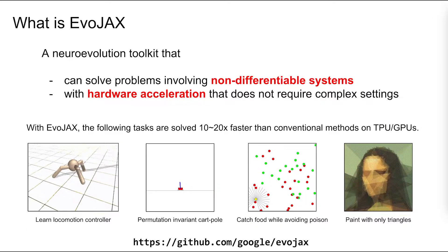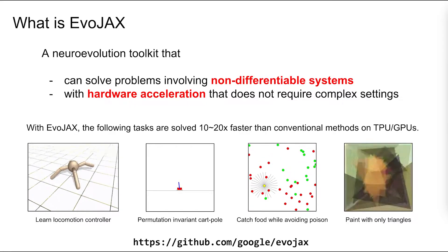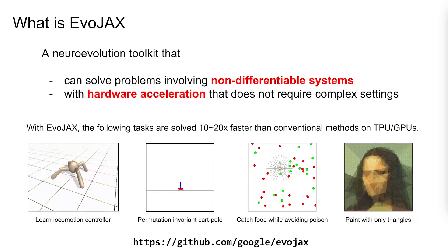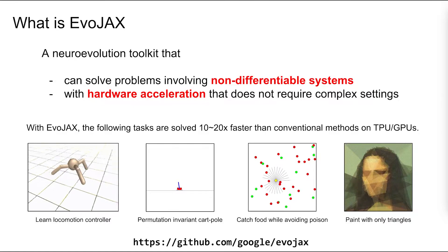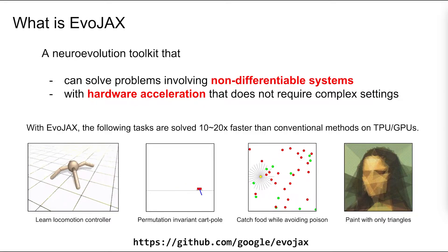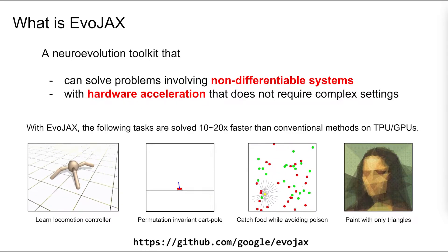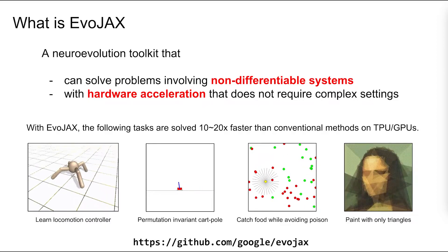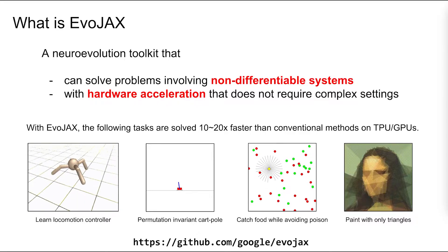First, let me introduce what EvoJax is. As I mentioned, EvoJax is a neural evolution toolkit that can solve problems involving non-differentiable systems, and at the same time, it is accelerated by modern hardware without the need of complex system setups. Compared with conventional methods, EvoJax can solve 10 to 20 times faster in the following popular tasks on modern GPUs and TPUs. EvoJax is available in the repository we show here.